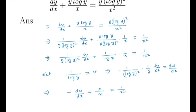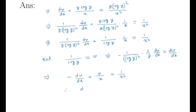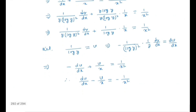Simplifying: dv/dx minus v/x equals minus 1/x². This is a first-order linear differential equation of the form dv/dx + P(x)·v = Q(x). I have already made a video on how to solve first-order linear differential equations — I will give the link in the description box. We solve this kind of equation by finding the integrating factor.